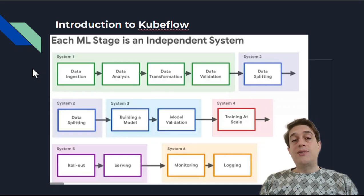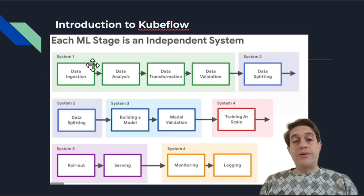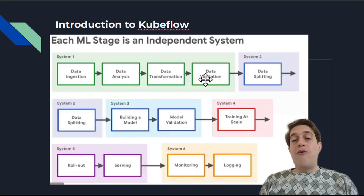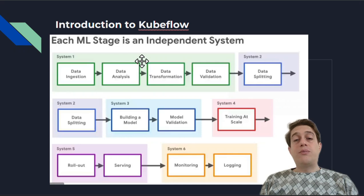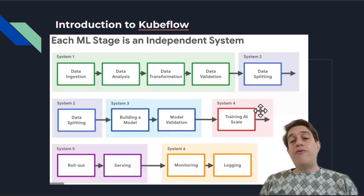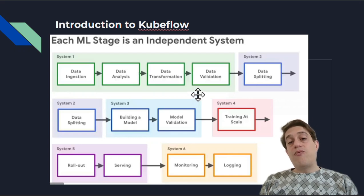Let me explain more about the MLOps stages. We can consider each step as a unique system. For example, in system one, we have four steps: data ingestion, data analysis, data transformation, and data validation. We can do these manually with a data mining team, but as the main responsibility of an MLOps engineer is to reduce the cost of development, it's better to automate all of these steps. So we need an infrastructure to do all of these steps automatically, and we need Kubeflow for that.